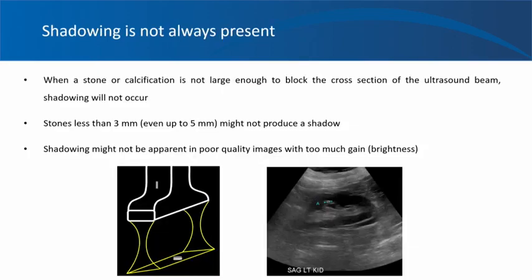Note that shadowing is not always present. Stones create shadow when they are large enough to block the ultrasound beam. But when a stone or calcification is smaller than the cross-section of the ultrasound beam, shadowing will not occur. Stones less than 3 millimeters, and sometimes even up to 5 millimeters, might not produce a shadow. Shadowing might also not be apparent in poor quality ultrasound images with too much gain. In this image you can see a hyperechoic structure in the kidney which appears like a stone but there is no shadow, leaving the question of whether it is sinus fat or a stone.